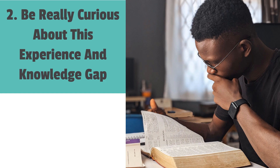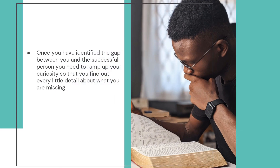Be Really Curious About This Experience and Knowledge Gap. Once you have identified the gap between you and the successful person, you need to ramp up your curiosity so that you find out every little detail about what you are missing. This requires a deep dive into what the person does and how they achieve their success. Ask yourself a number of questions about the gap. If you cannot find the answers that you need, then be brave and reach out to the person that you are comparing yourself to. Ask them specific questions about how they got to where they are today. Most people like to tell their story and will probably be willing to help you.